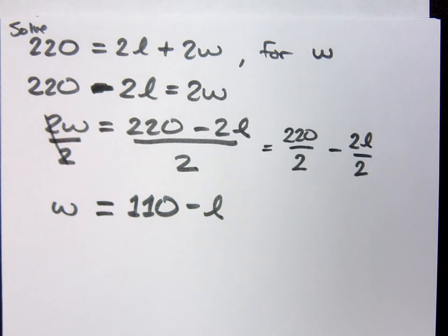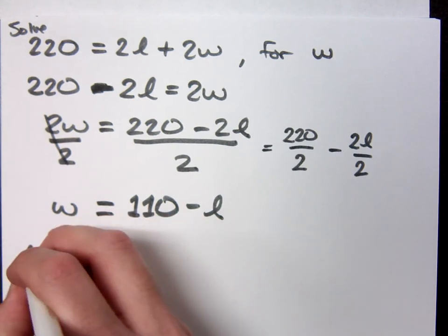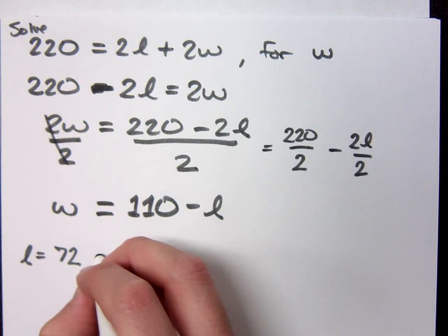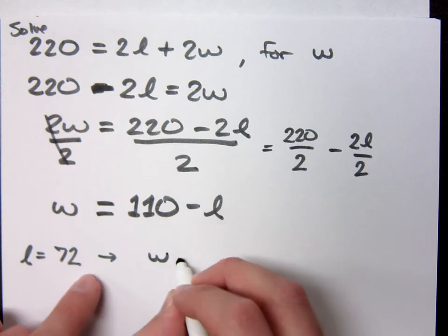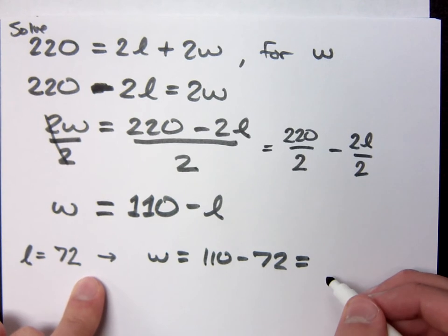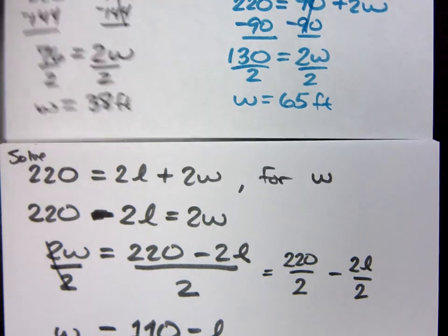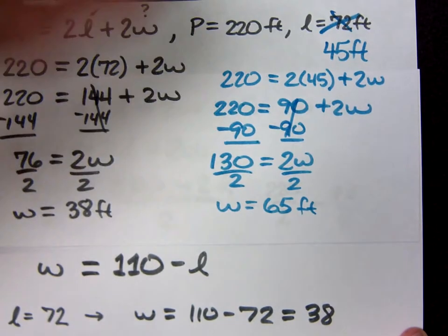So when this guy comes out and changes the number again and gives me a different L, do I need to freak out and have to solve another equation? No, check this out. The first time he told us that the L was 72, right? So that would mean that my W, my width, was 110 minus 72. What's 110 minus 72? 38. And if you look back, what did we say it was? It was 38, right?